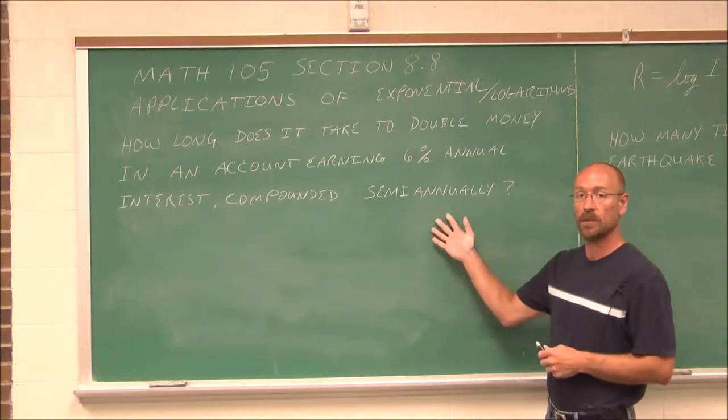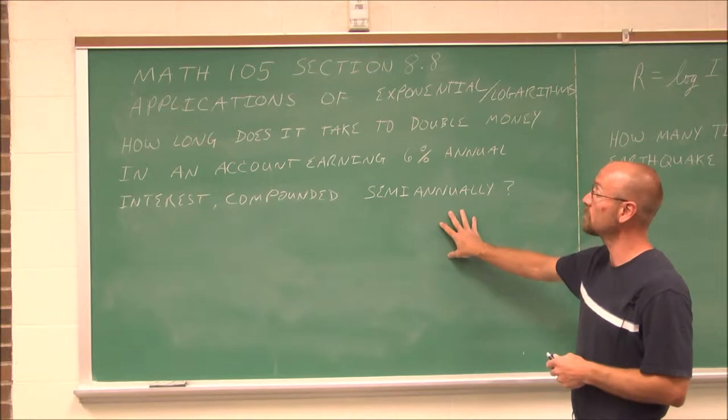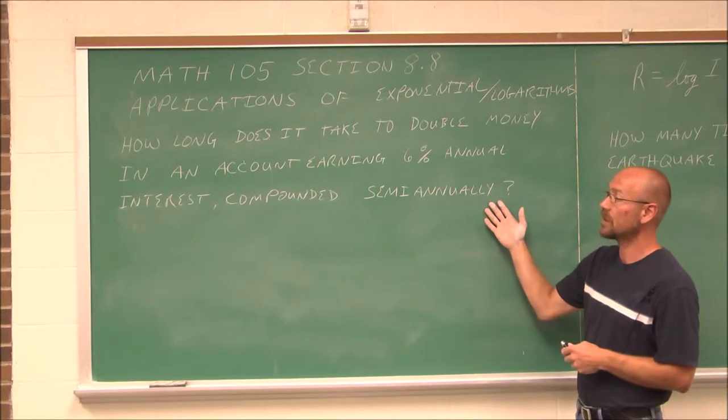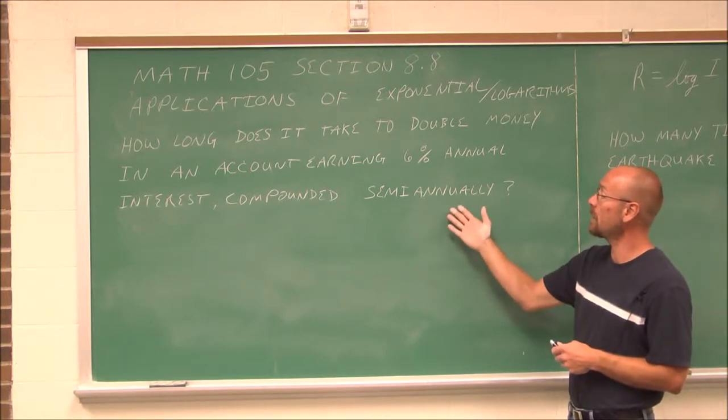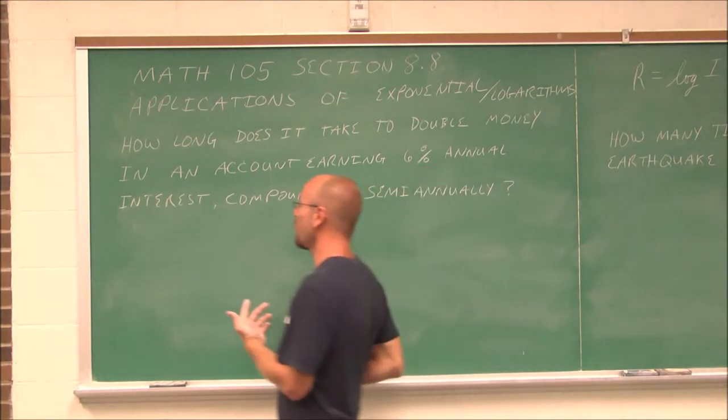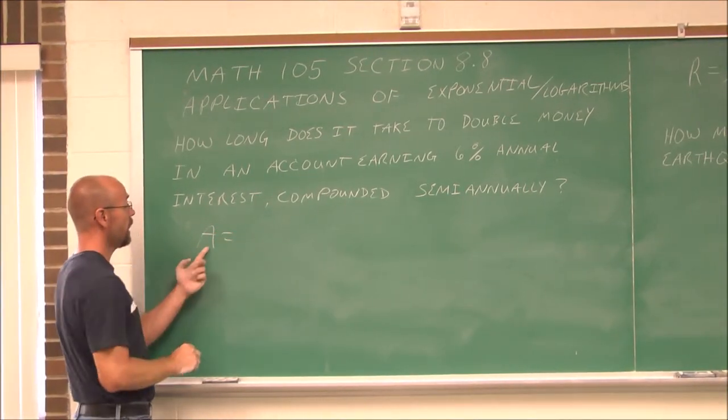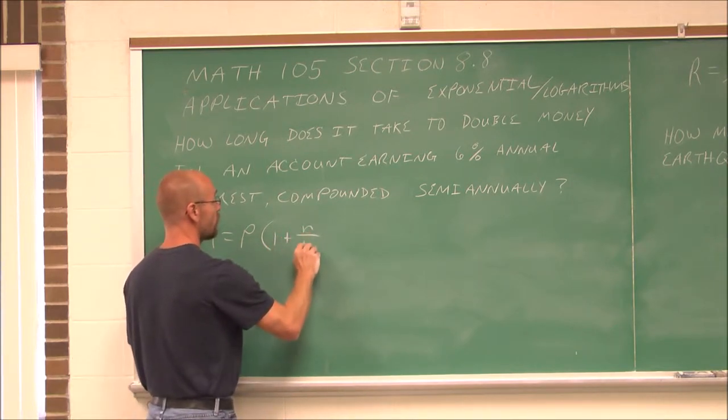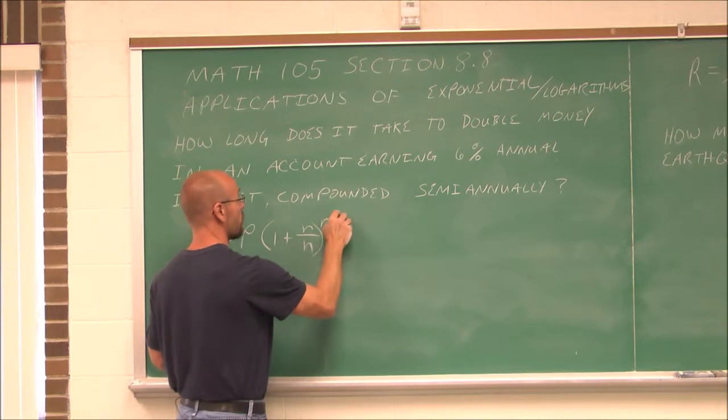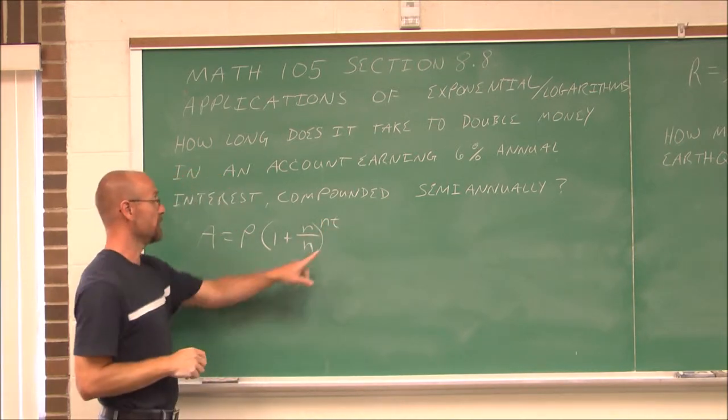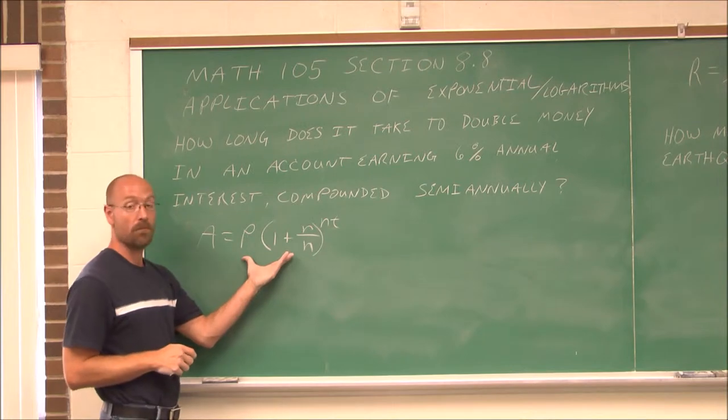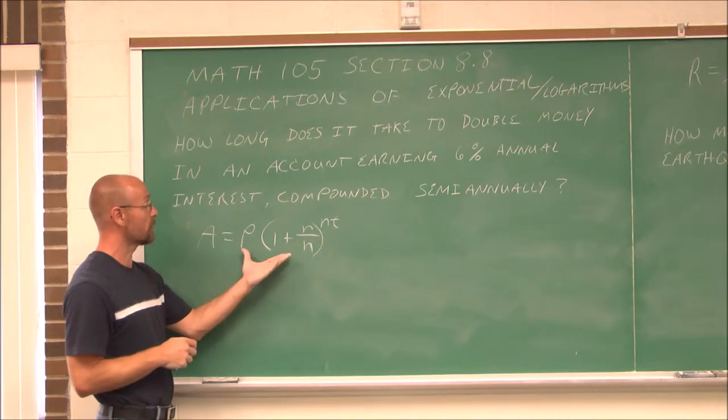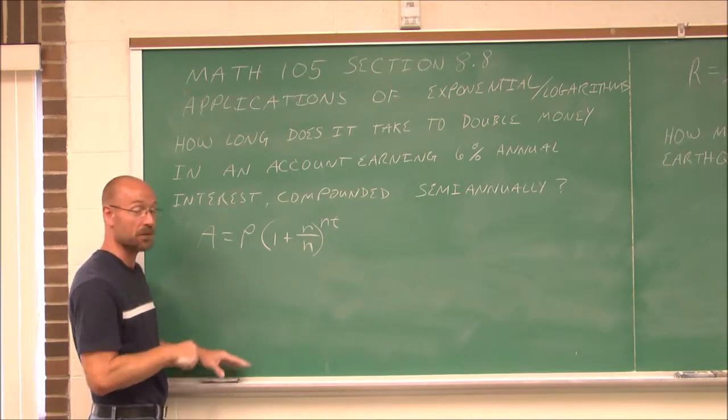Our first example is one that we've seen similar to in previous sections. How long does it take to double money in an account earning 6% annual interest compounded semi-annually? If we recall the compounded interest equation, A equals P times the quantity 1 plus the rate over the number of compoundings to the number of compoundings times the number of years. Hopefully we committed that to memory.